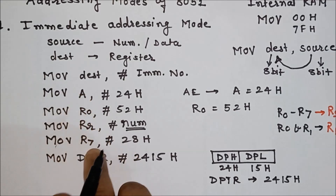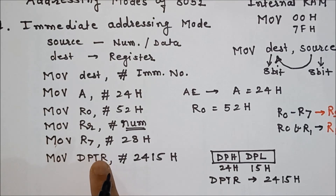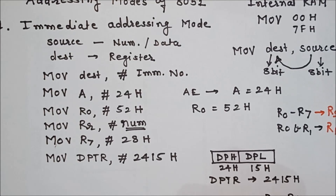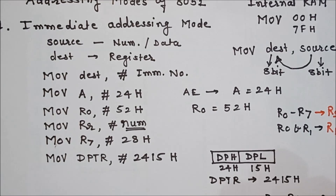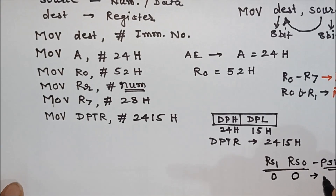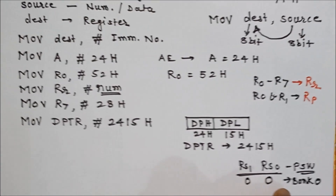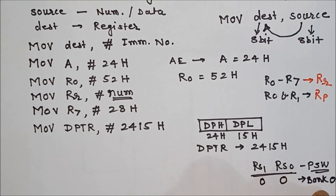For registers, the register bank is decided by the RS0 and RS1 bits of the PSW register. The microcontroller verifies these bits of the PSW register. By default they are 00, so bank 0 is selected. Generally we use the default value and use registers from bank 0.